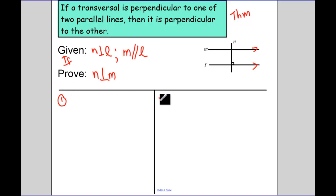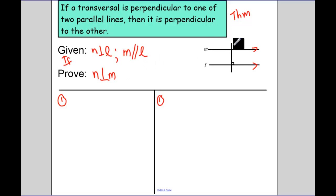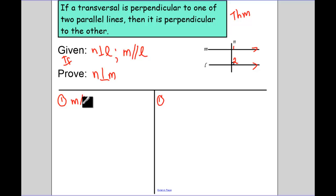Think about how we prove perpendicular: we show that they form right angles. Let's put some angle numbers in. If I don't give you angle numbers, you can always add those in. First, we always start out with the given: M is parallel to L, and at the same time N is perpendicular to L — and that's given.